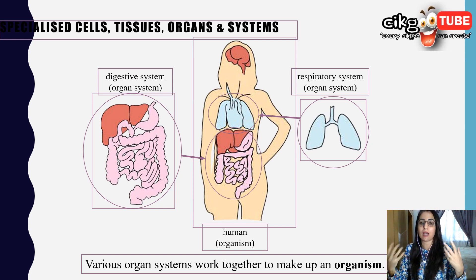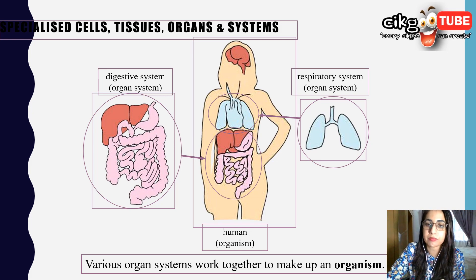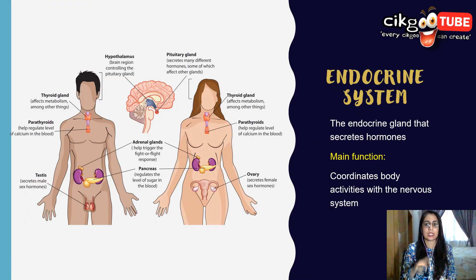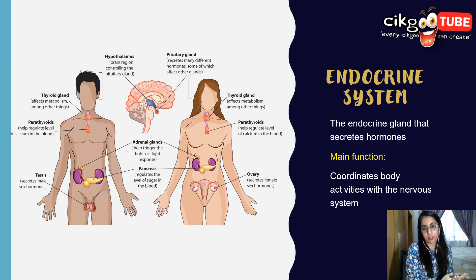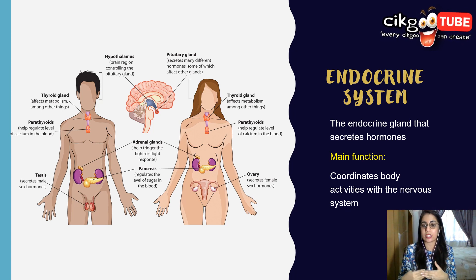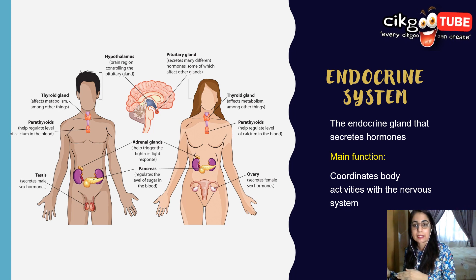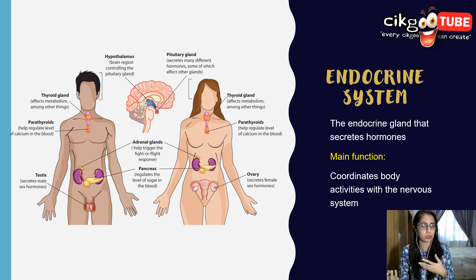Now let's look at the systems present in our body that make us an organism. The first is the endocrine system — the endocrine glands secrete hormones, and this system coordinates body activities together with the nervous system. You will study the endocrine system further in around Chapter 12 or 13.